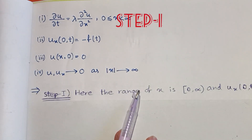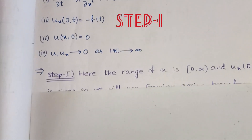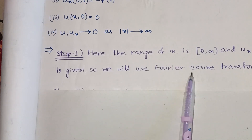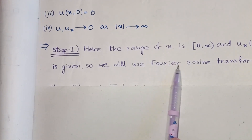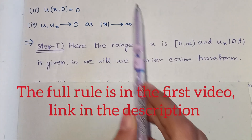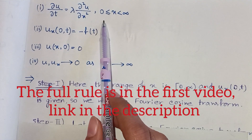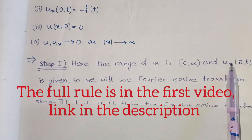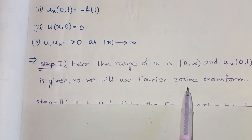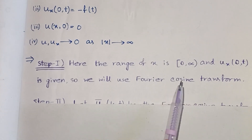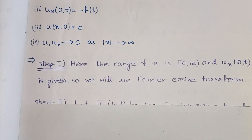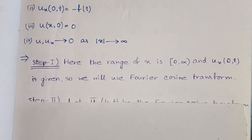Our first step is to determine which transformation we are going to use. This is Fourier cosine transform and not Fourier sine transform — why? Because the range of x is 0 to infinity, and also u_x(0, t) is given. So we are going to use Fourier cosine transformation and not Fourier sine transformation. This determination process is Step 1.